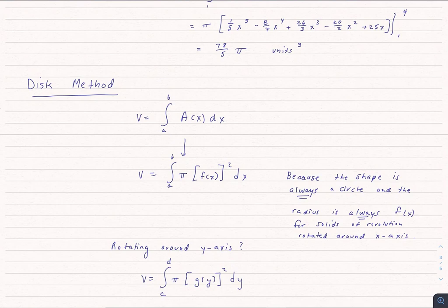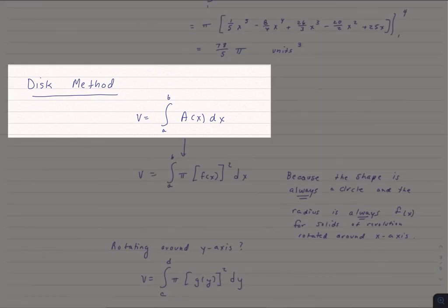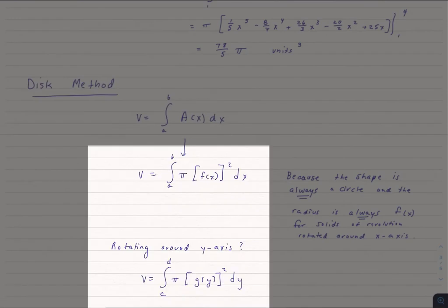We generalize this to calling this the disk method. If I have a function rotated around the x-axis or the y-axis, then that area function, that a of x, is always going to be pi times the function squared, because it's always going to be a circle, and the radius is always going to be the function.